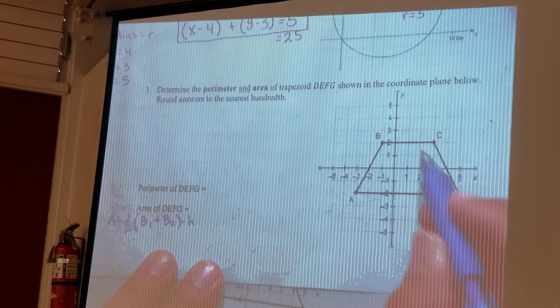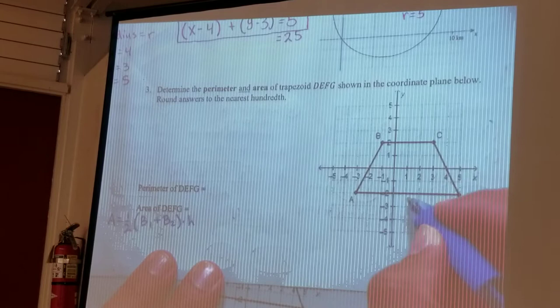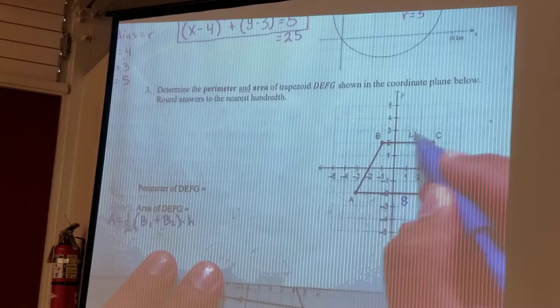So base one is one, two, three, four, five, six, seven, eight units long and then base two is one, two, three, four units long. It's always the two parallel lines that are the bases.